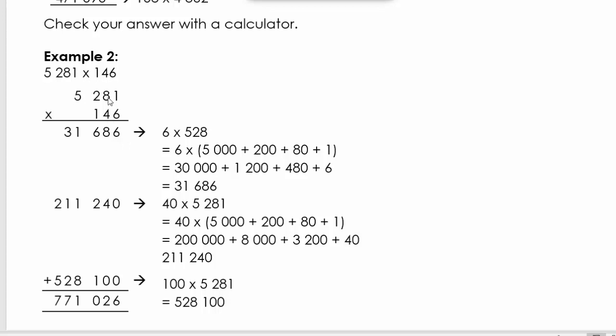Then we're going to take the 40 and we're going to multiply it with that number. So we're going to say 40 times 5,000, 40 times 200, 40 times 80, 40 times 1. And these are the answers we're going to get: 200,000, 8,000, 3,200, and 40. If we add this, we're going to get this answer and we're going to write it down there.